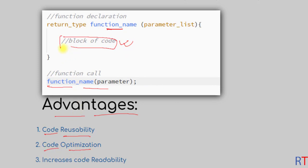Because we can reuse one particular block of code multiple times, we have to write less code in our program, and that way we can optimize our code — that's code optimization. Next we have code readability, so by the use of functions in our program we can increase the readability of the code.